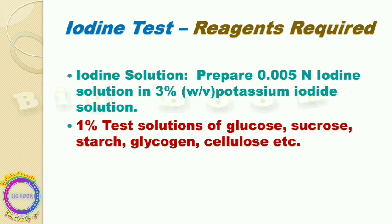The reagents required for the iodine test are the iodine solution and 1% test solutions. The iodine solution is prepared as a 0.005 normality iodine solution in 3% weight per volume potassium iodide solution. The 1% test solutions include glucose, sucrose, starch, glycogen, and cellulose dissolved in distilled water.